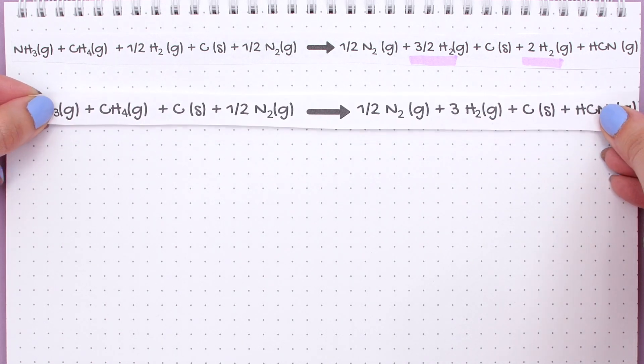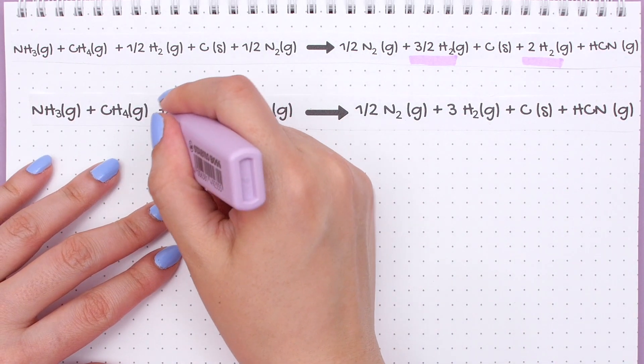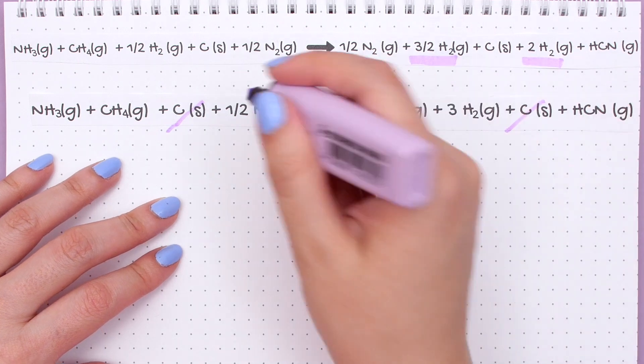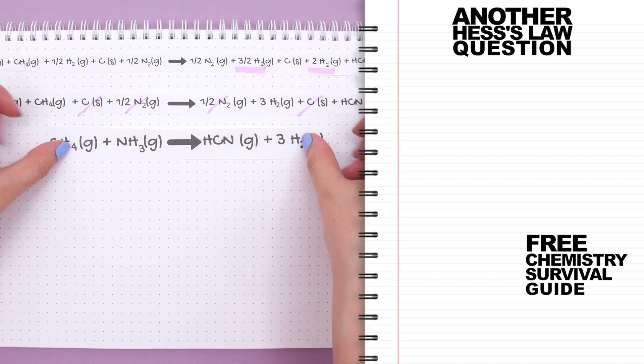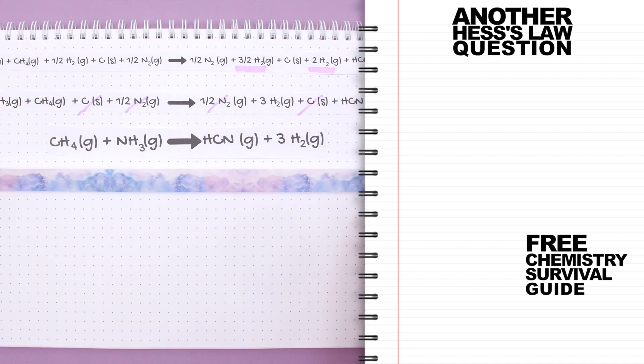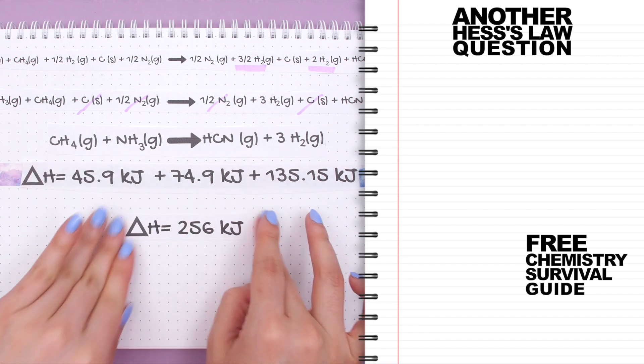Now this is our new reaction and we can cancel out more like terms. We will cancel the carbons on either side and we can cancel the N2s as well. We then get our goal reaction, and now we'll add up all the new enthalpy changes together and this is our total enthalpy change of the reaction.